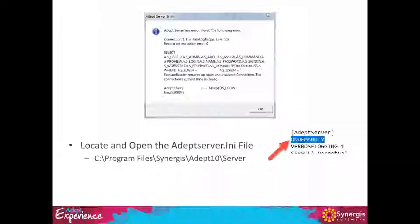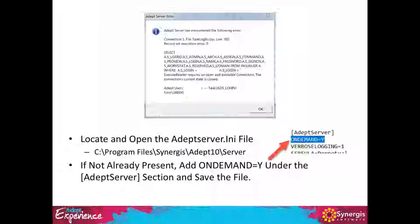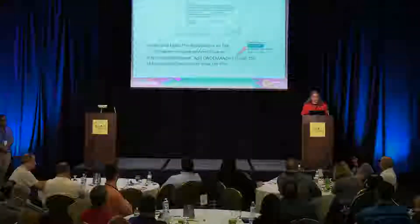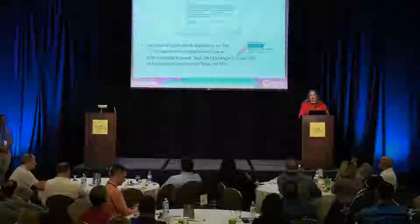For Adept 2017 and previous versions, it's now recommended to manually configure that same setting. Find the adeptserver.ini file on your Adept server in the server folder. Under the Adept server section of the file, add the command OnDemand=Y and save the file. You'll need to stop and restart the service for the change to take effect. Also check for an older command CheckConnections=Y — we're no longer using that one. If you see that line, remove it and replace it with OnDemand=Y.